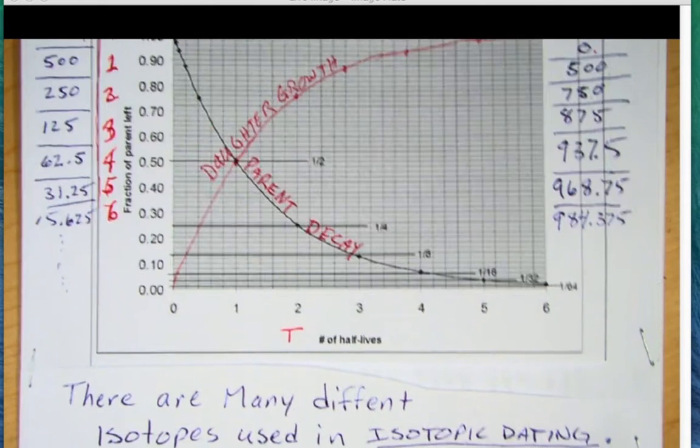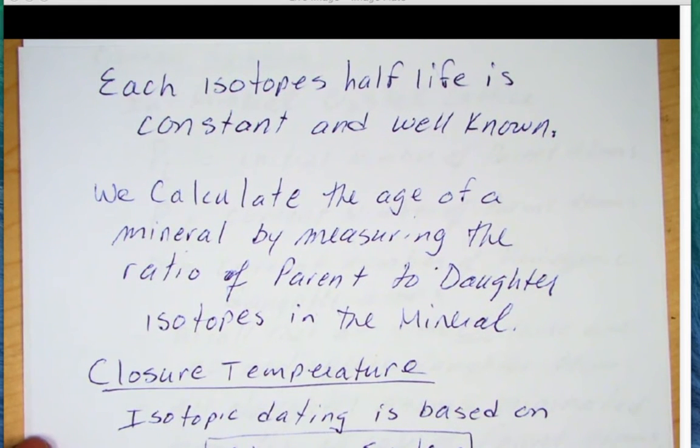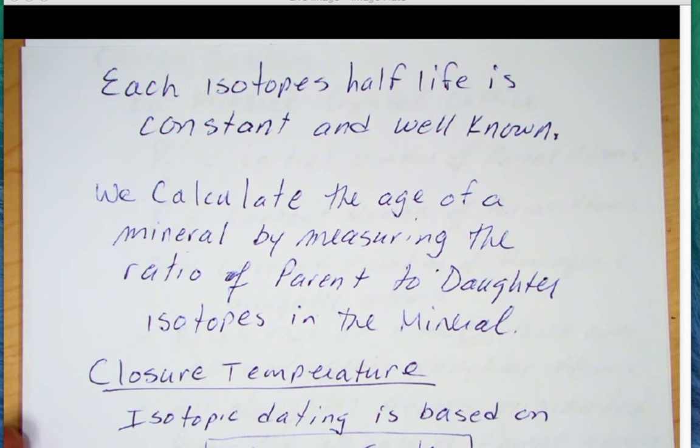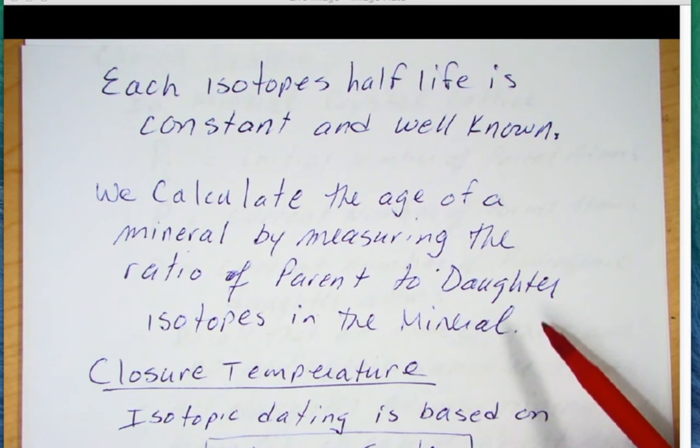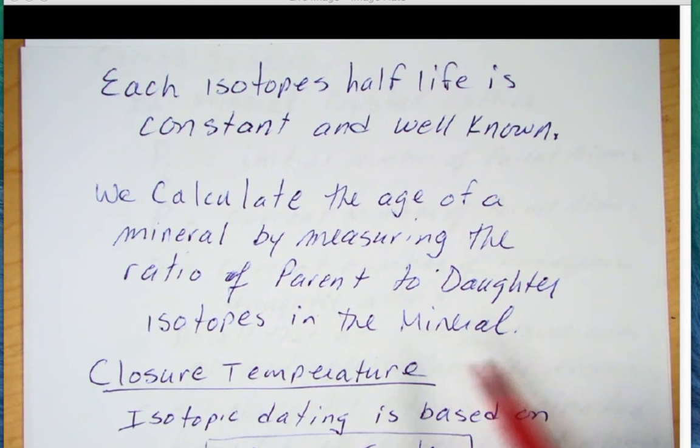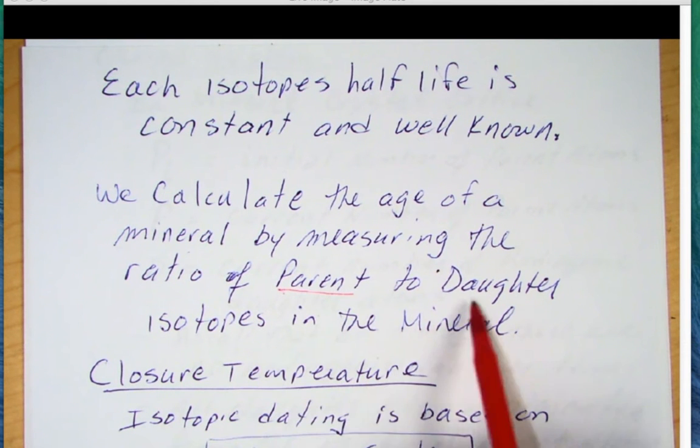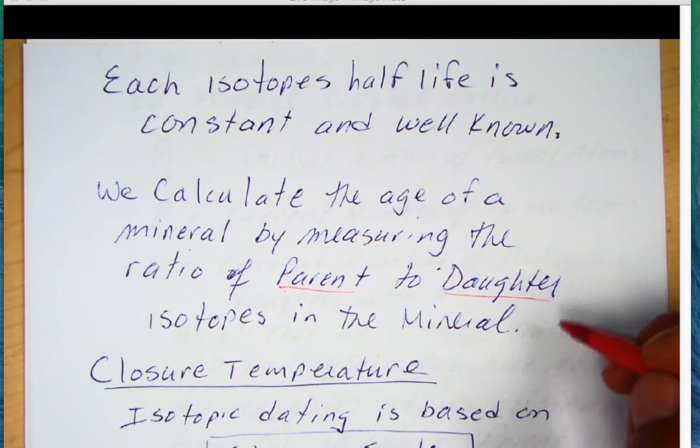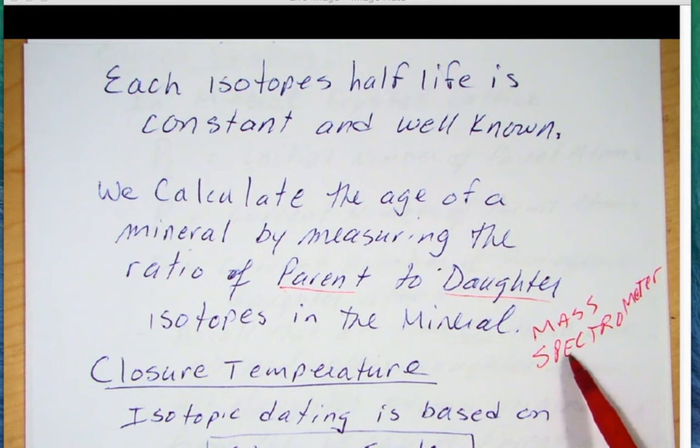Now, there are many different isotopes used in isotopic dating. And each isotope will have its own individual half-life, its own decay rate. Each isotope's half-life is constant, and it's well known. It's been measured in multiple laboratories here on Earth. It's been measured in the sky lab. It's been measured up in space. So a variety of different places, and we get the same numbers. So it's a universal constant. We calculate the age of a mineral by measuring the ratio of parent to daughter isotopes in the mineral. So the key thing, we want to know the number of parent and the number of daughter atoms. And what we use, we use a machine called a mass spectrometer. This mass spectrometer basically uses a sector magnet in a vacuum and can spread the isotope masses out to measure individual atoms.